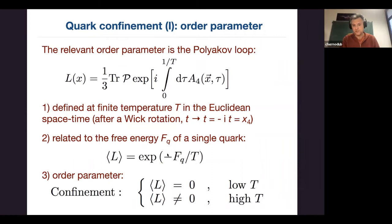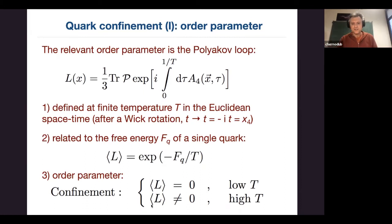In the confinement regime it's impossible to put a quark in the vacuum — its free energy is infinite — so the Polyakov loop expectation value is zero. Once quarks are liberated at high temperature, the free energy becomes finite and the Polyakov loop becomes non-zero. So: zero in the confinement phase, non-zero in the deconfinement phase. That's how on the lattice we define which phase we are in.